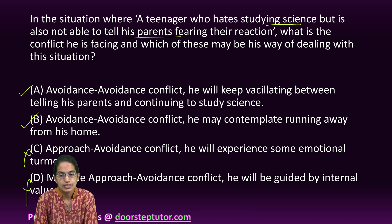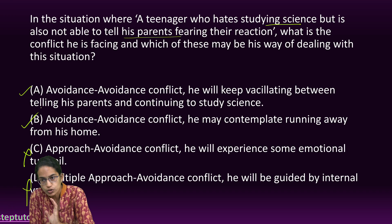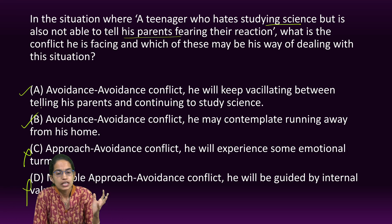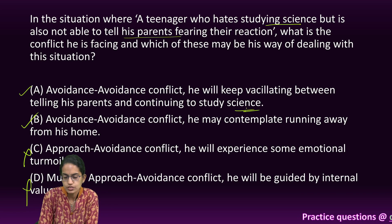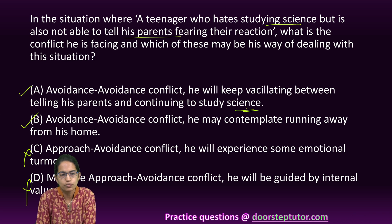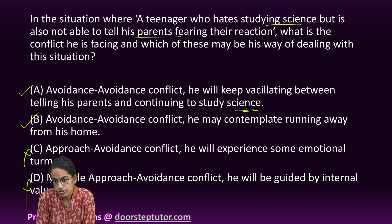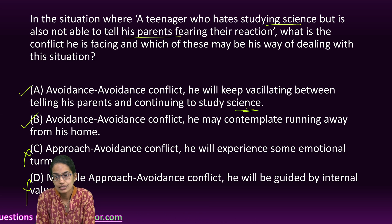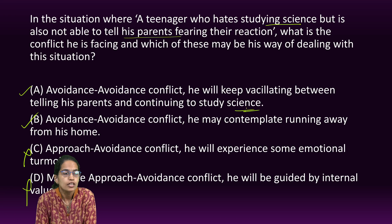In avoidance-avoidance, the person might run away from home because they don't want to study science and don't want to tell the parents. Or they can keep on studying while fearing parental reaction — just to maintain a balance and escape having to confront the parents. Both of these are the correct options.